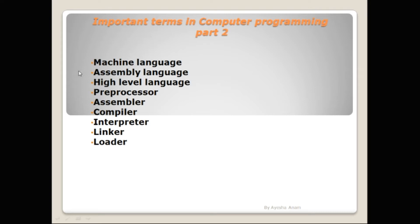Some terms are related to types of programming languages like machine language, assembly language, and high level language. Some terms are related to the computer programs or software that are used for execution of programs, like preprocessor, assembler, compiler, interpreter, linker, and loader.